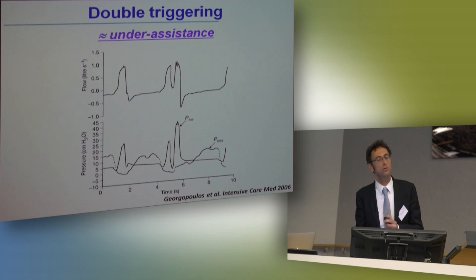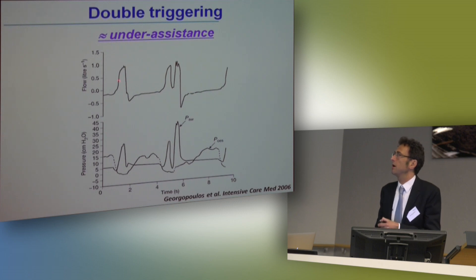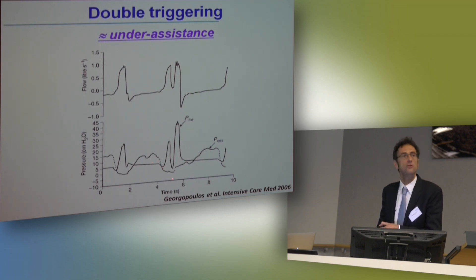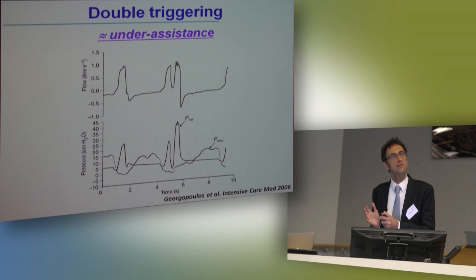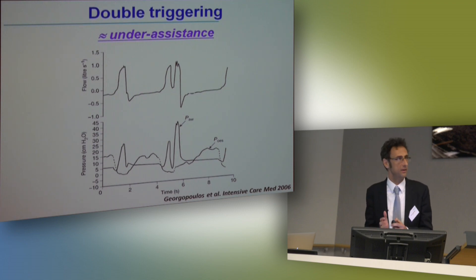What causes double triggering? Double triggering is caused by under-assistance. Looking at the flow, pressure, and esophageal pressure traces, double triggering is caused by a very intense inspiratory effort — so intense that the patient is able to trigger the ventilator twice with only one inspiratory effort. This means the patient is not receiving enough assistance.